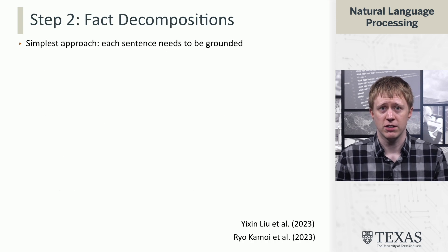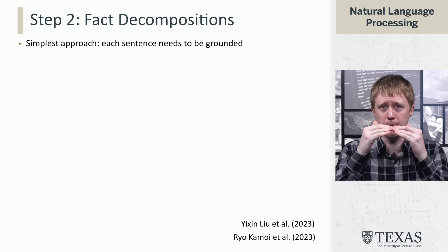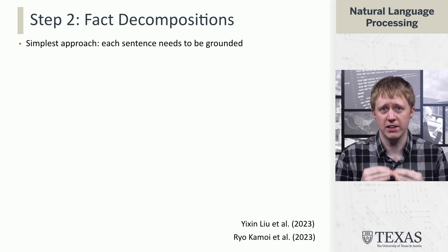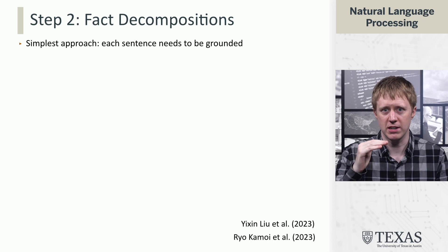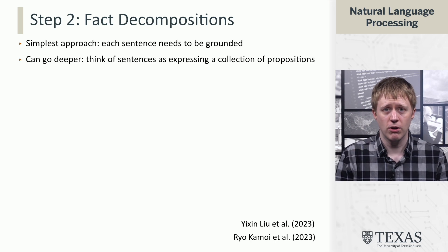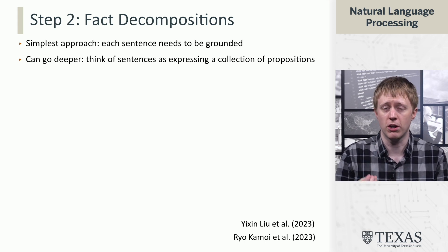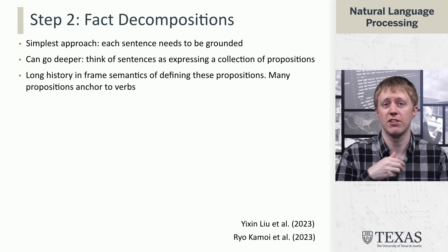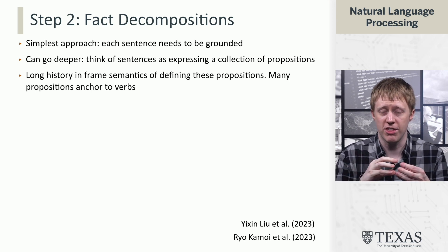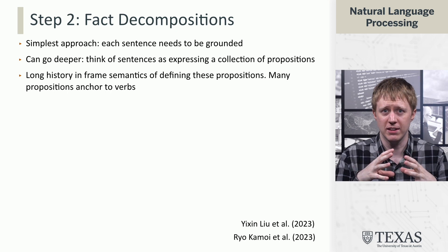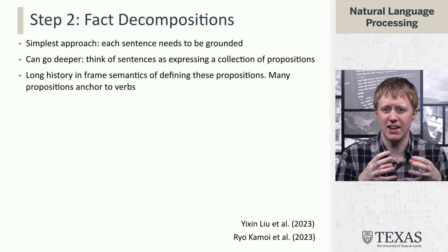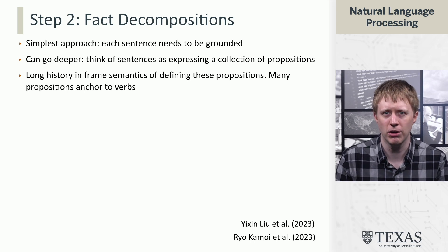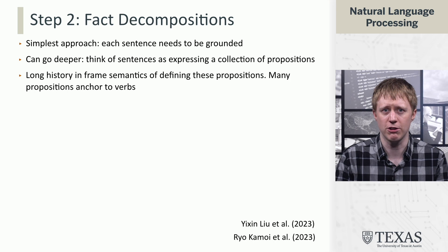Let's think about this second stage. Given a long response, what are the pieces that need to be checked? One approach is to just break it into sentences and check sentence one, sentence two, sentence three, etc. But you can go a little bit deeper than this, because a sentence might be long and complex and express several of what we call propositions. This comes back to ideas from syntax and frame semantics — basically, what are the units of meaning in sentences that reflect something happening in the world? A lot of the time you could think about this as being anchored to verbs.